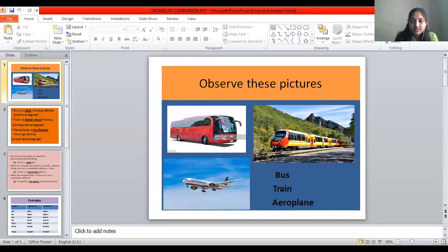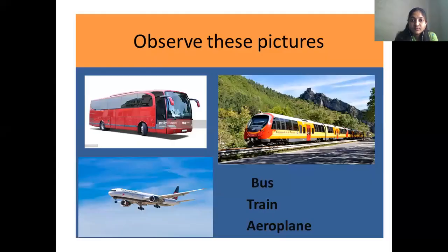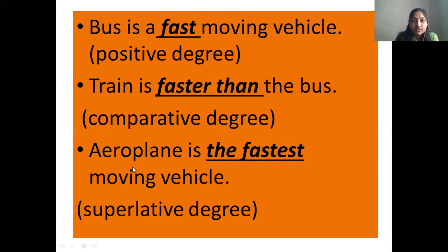Can you see three pictures on the screen? There is a bus, a train, and an aeroplane — three different means of transport. When we talk about the bus alone, we use the positive degree. We describe its speed using the word 'fast.' In the second sentence, 'train is faster than the bus' — here we compare the speed of the train with the bus.